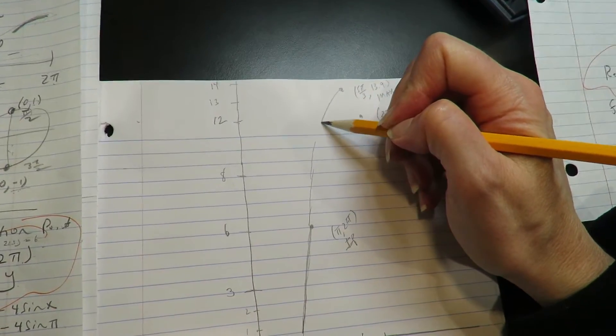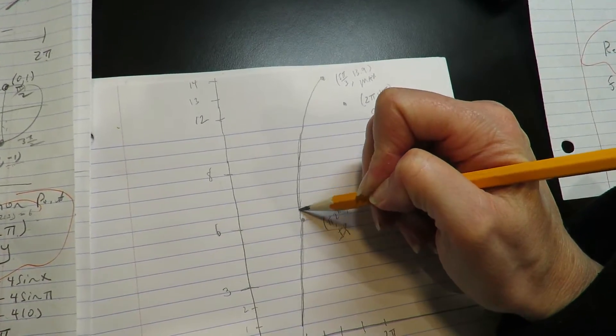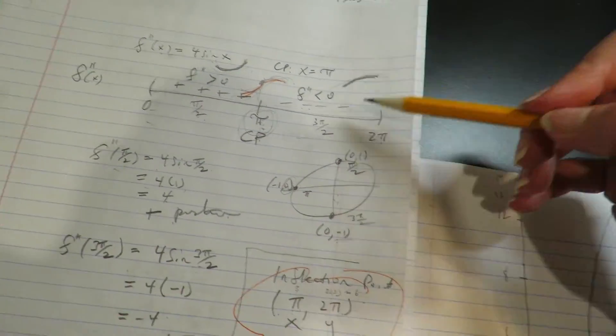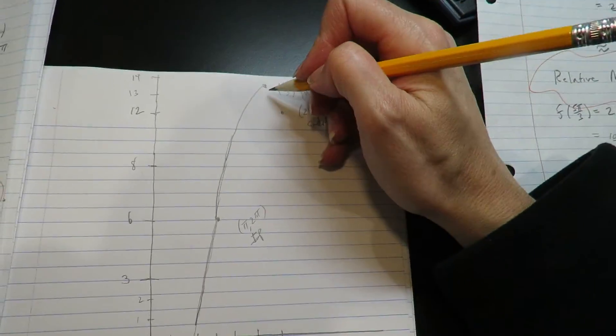and you switch concavity. At π you're still increasing on the first chart. You're concave down though on this guy. All right, so then you hit 5π/3 you start decreasing but you always stay concave down to the end.